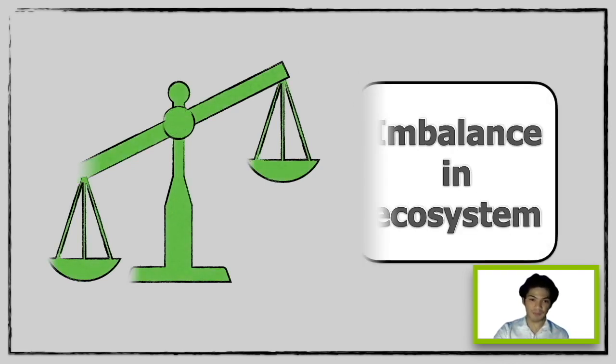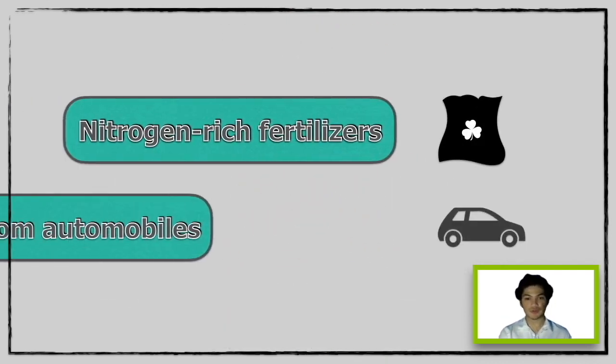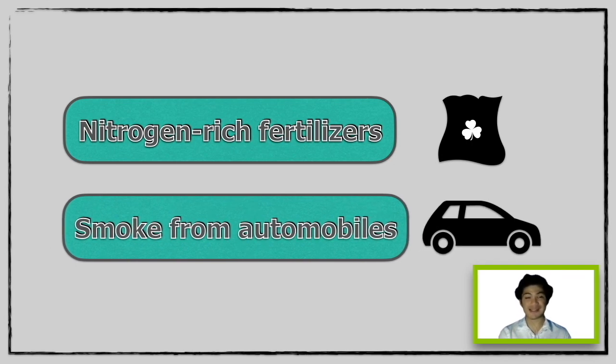The more acidic the soil becomes, the less fertile it gets. This then gives plants stress. Aside from fossil fuels combustion, production and use of nitrogen-rich fertilizer adds stress to the environment as well as the release of smoke from automobiles that destroys the natural cycles. This round goes to Challenger 3.